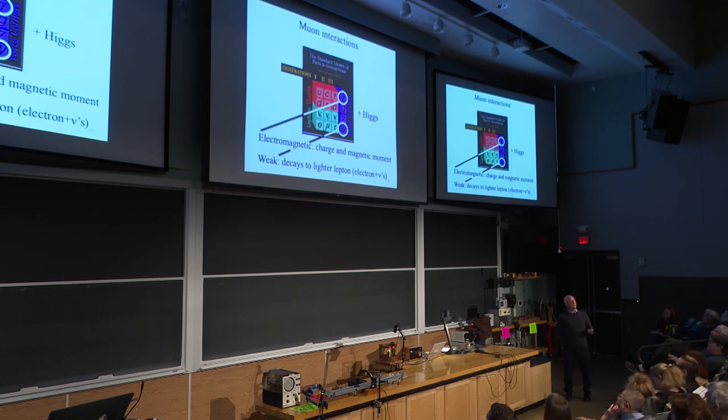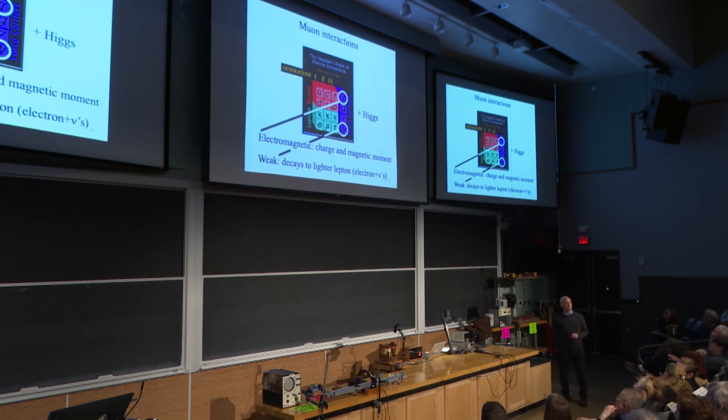The muon has charge, so it interacts with electric and magnetic fields and a magnetic moment. And it also interacts weakly. And in terms of the standard model, we associate the electron and electric and magnetic interactions with the gamma, which is a photon, we call that a photon, and the weak decay with another particle called the W.